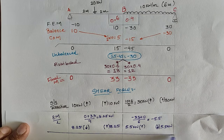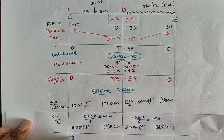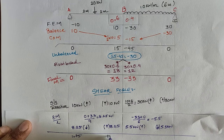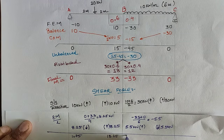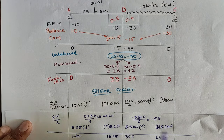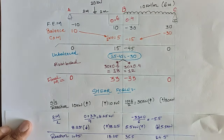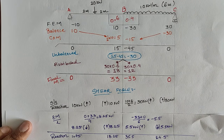Summing the simply supported reactions and sigma-M/L corrections, the final reactions are: at A: 10 minus 8.25 equals 1.75 kilonewton; at B-left: 10 plus 8.25 equals 18.25 kilonewton; at B-right: 30 plus 5.5 equals 35.5 kilonewton; and at C: 30 minus 5.5 equals 24.5 kilonewton.